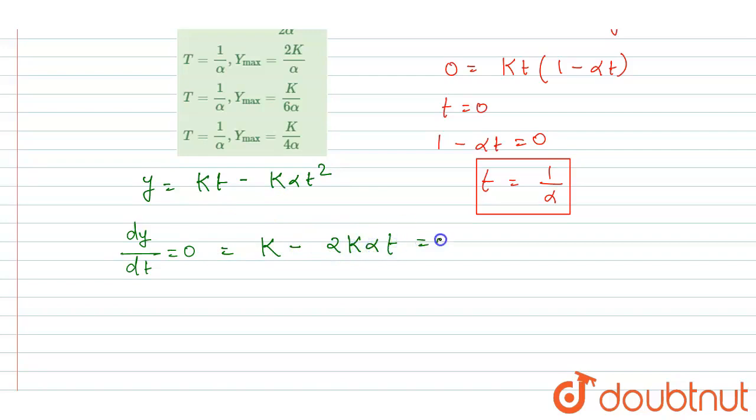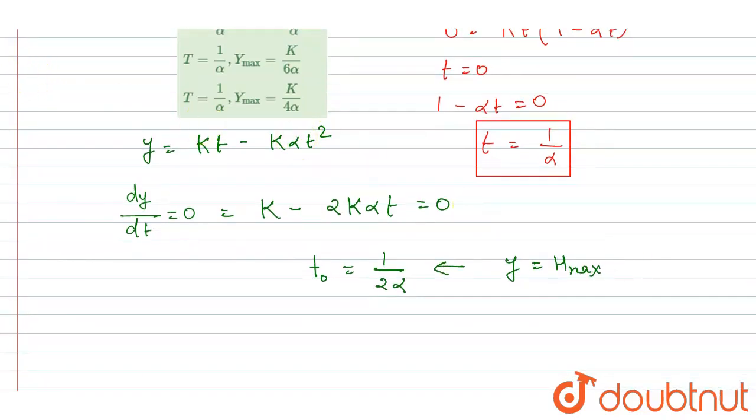t = 0. So from here you will get the time when dy/dt will become 0 as t = 1/(2α). Just put the value of this time in this equation. You got the time when the maximum height will be reached. So put this time in this equation.